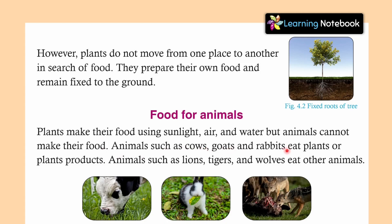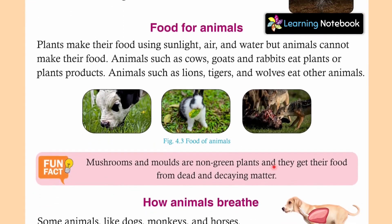Animals such as cows, goats and rabbits eat plants and plant products. कुछ animals ऐसे होते हैं जो सिर्फ plants या plant products ही खाते हैं — जैसे cow, goat, rabbits, deer. But animals such as lions, tigers and wolves eat other animals. काफी सारे animals ऐसे भी हैं जो दूसरे animals को खाते हैं, उनका flesh खाते हैं — for example, lion, tiger, wolves, leopard.